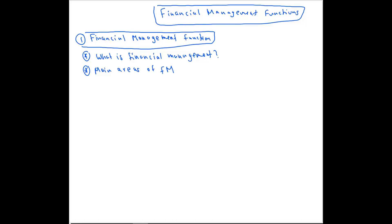There are three main areas in financial management. First one is how to raise funds — you need money for investment purposes and for working capital purposes, so you need to know how to raise money for these. Second is how to invest, whether for capital investments or working capital investment. Third, you have to know how to monitor and control your financial resources.